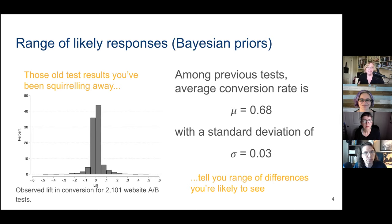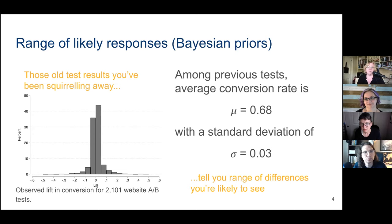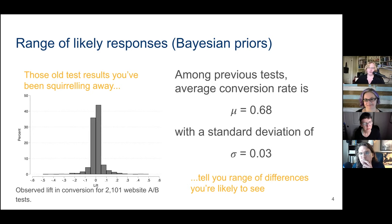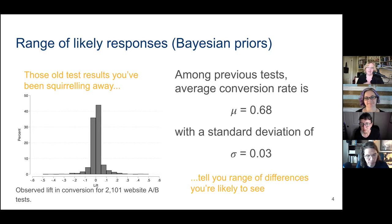You basically cannot get traction on the problem without making some statement about the range of differences you're likely to see between A and B. But this group has been squirreling away data on tests for years, so we can use that data to inform what range of differences to expect. For most of this presentation, I'm using an example based on about 2,000 website A/B tests run on a large software platform that facilitates website A/B testing.